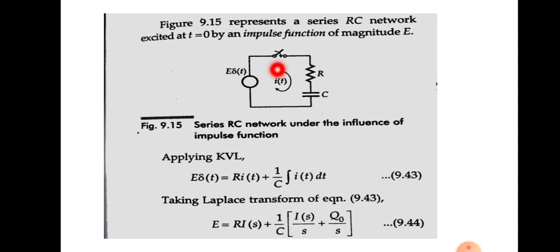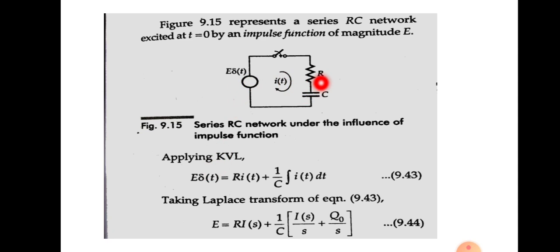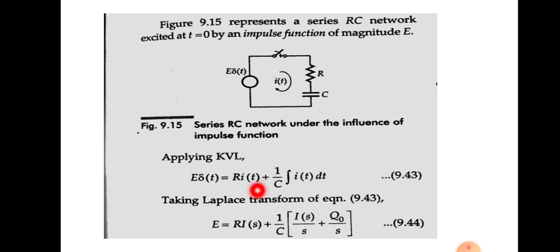At time T equal to 0 the switch is closed, so current I(T) flows through the circuit. We apply KVL to this circuit. By KVL, the total voltage equals the sum of voltage drops across the circuit components. So we can write: E·δ(T) = R·I(T) + (1/C)·∫I(T)dt. The input source is E·δ(T), the voltage drop across the resistor is R·I(T), and the voltage drop across the capacitor is (1/C)·∫I·dt. The applied voltage equals the sum of voltage drops across each component.